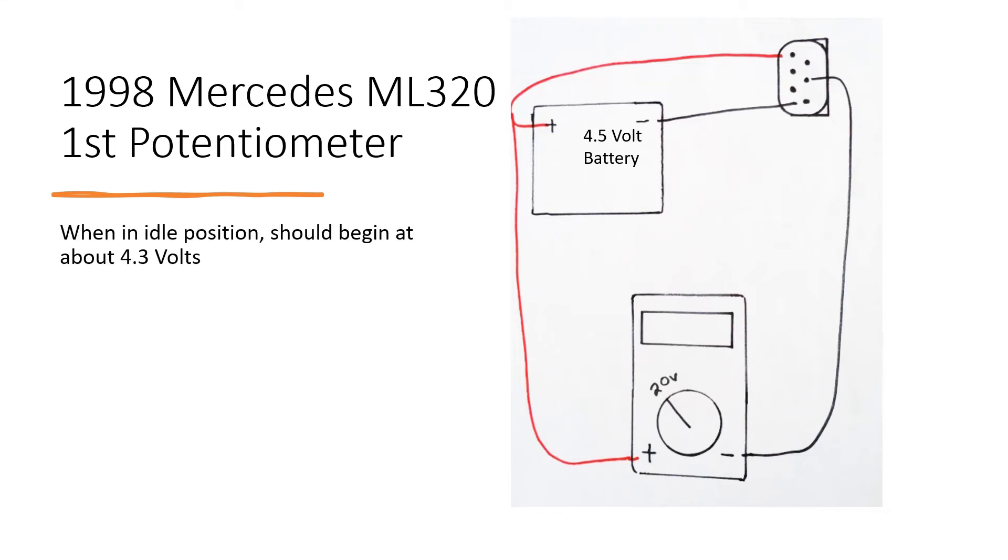After doing that, it should read about 4.3 volts in its idle position. As you press the sensor in, it should read about 0.2 volts at the very final point. You are also checking for spikes and glitches during these tests.